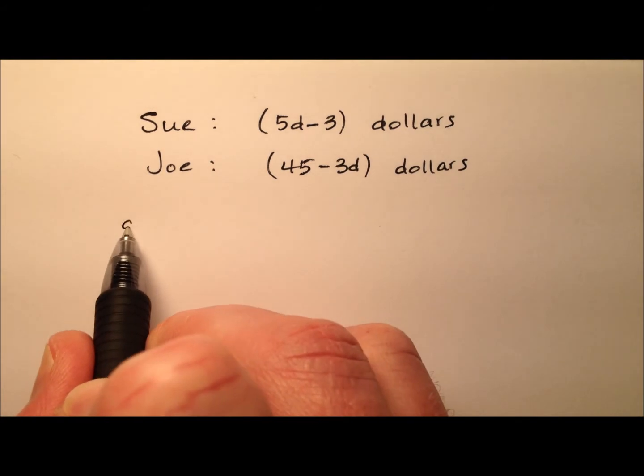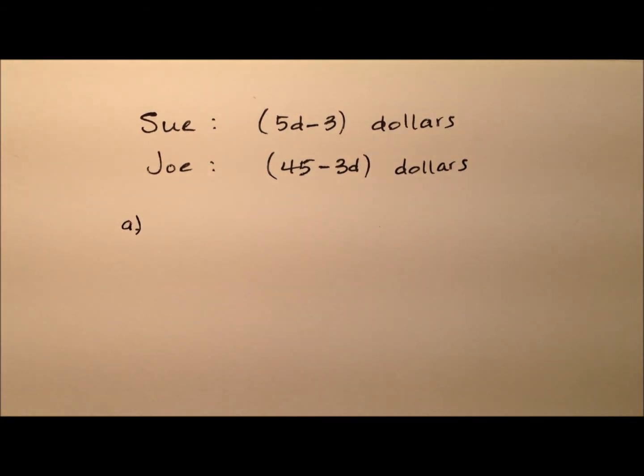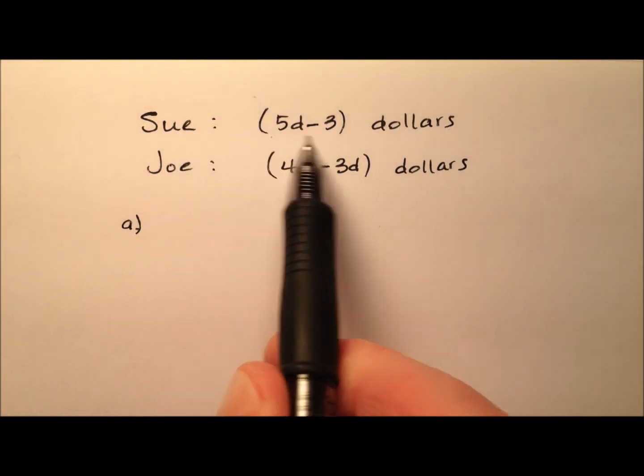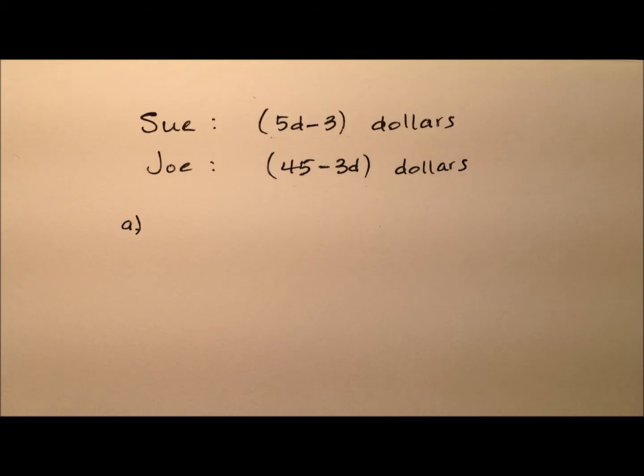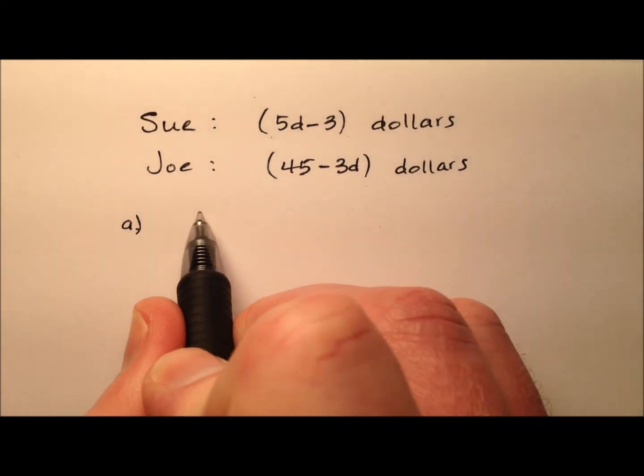Let's look at these five different questions. Part A is asking how much money do they have together? Well, we don't know an exact dollar amount and we don't have a value for d, so the best we can do is simply add up their expressions.